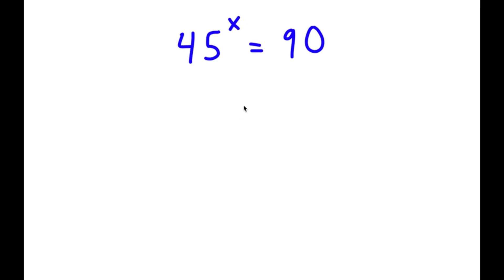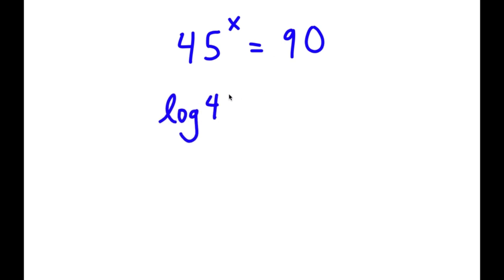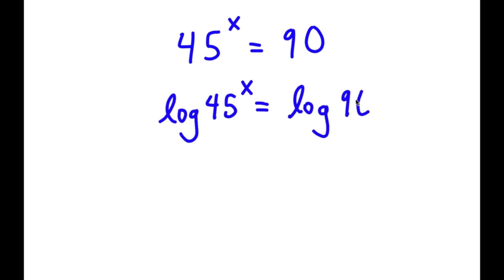In this problem, I have 45 to the power of x is equal to 90. To solve this, I'm going to first start by taking the log on both sides. So now I have log 45 to the power of x is equal to log 90.